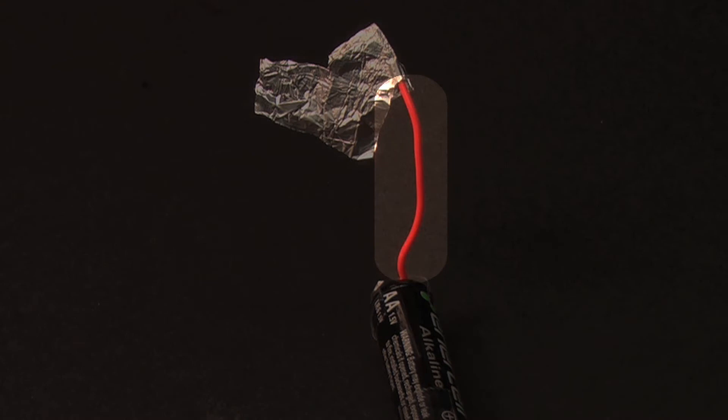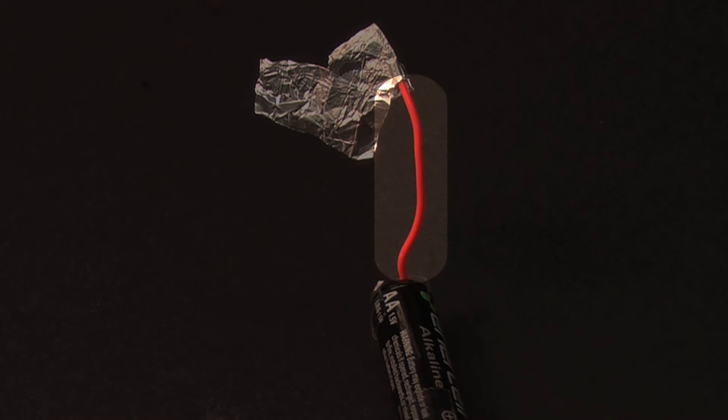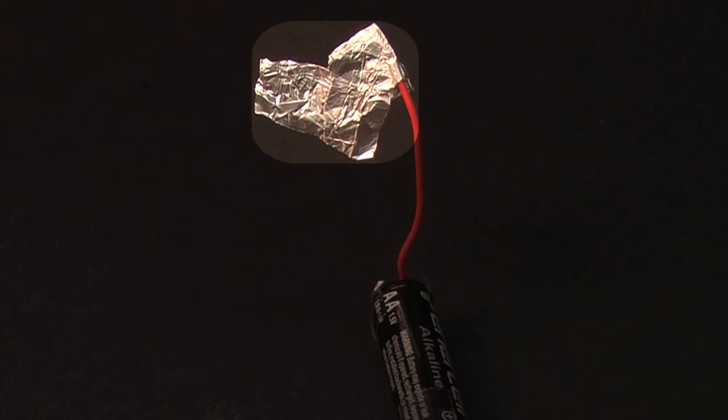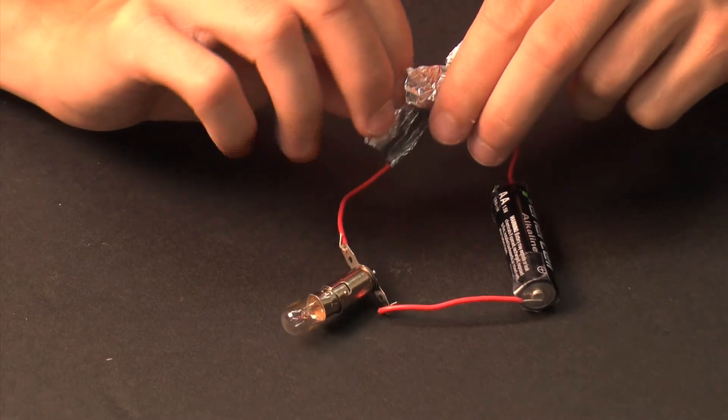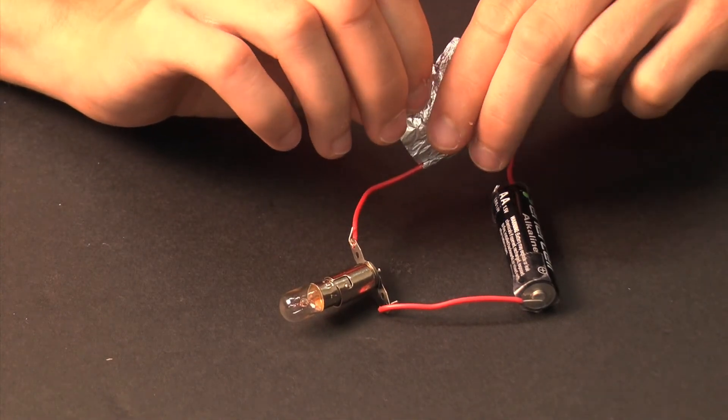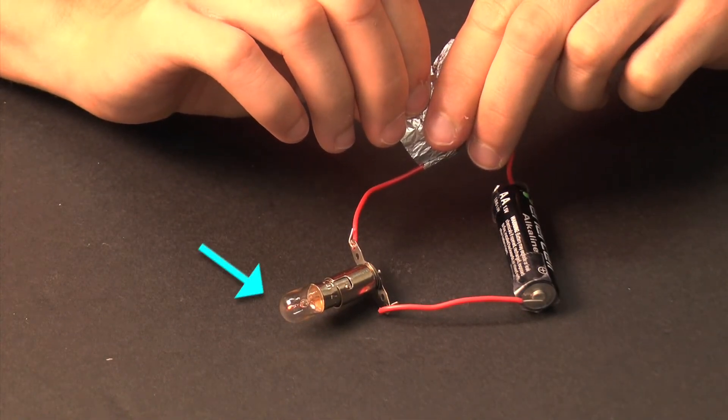Finally, attach a 2-inch jumper wire to the free end of the battery and wrap a piece of foil around the other end of that wire. Next, we bring the two pieces of foil together, thus closing the circuit. The result is that light is emitted from the light bulb.